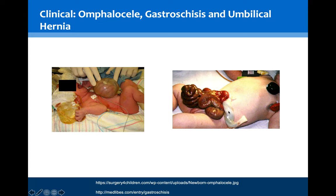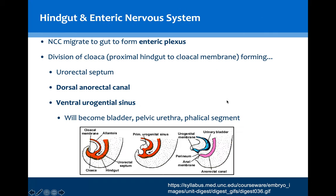The hindgut is positioned as a result of the rotations described during formation of the midgut. However, the cloaca at the caudal end of the fetus needs to divide into a urogenital system and a hindgut system. The development of a uro-rectal canal will divide the cloaca into a dorsal anorectal canal and a ventral urogenital sinus, which will become the bladder, the pelvic urethra and the phallic segment of the penis or clitoris.